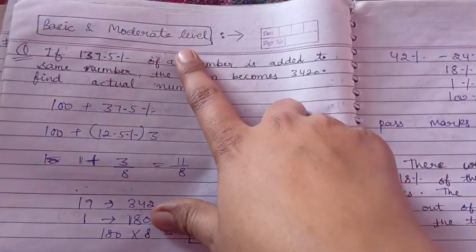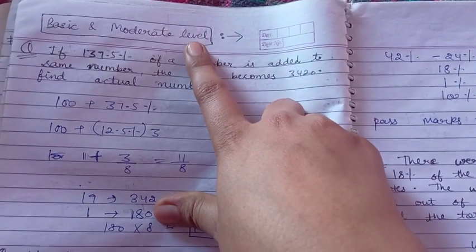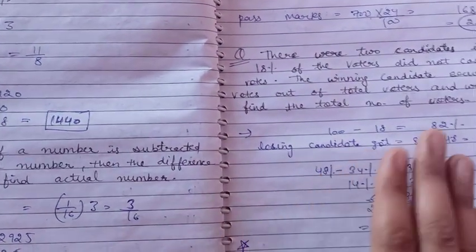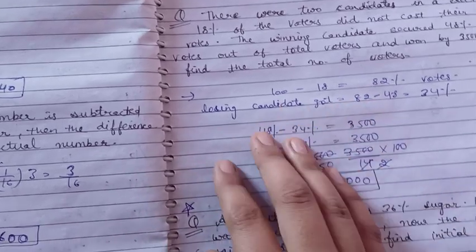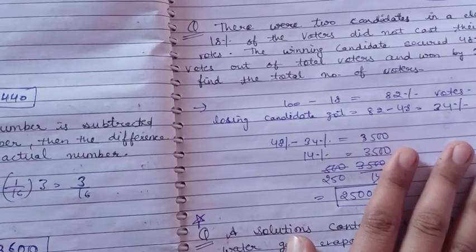The other chapters are in another notebook. From here I have started. As you can see, this is percentage chapter and I have started from basic level. Basic and moderate level - I used to note down the question and after that I used to write the solution.